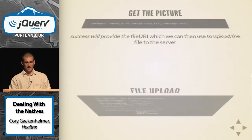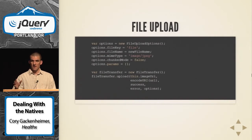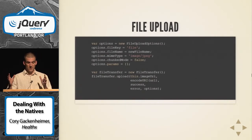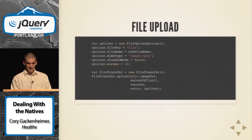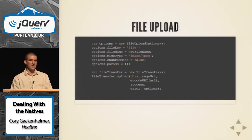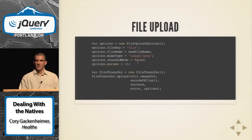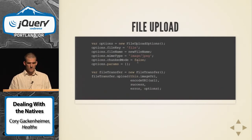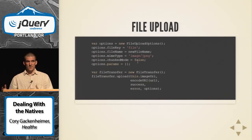Within that callback you grab the file and upload it using PhoneGap's file upload — pass in the image URI, set your options to match the MIME type to JPEG, and upload to your server URL. That's it: native device features in your web app on your mobile device.